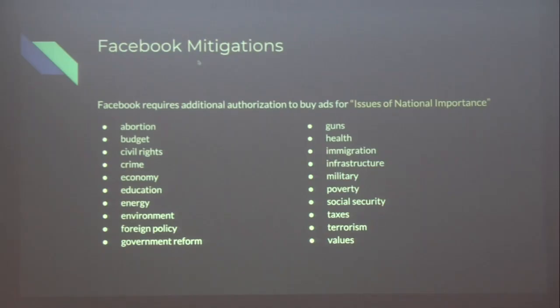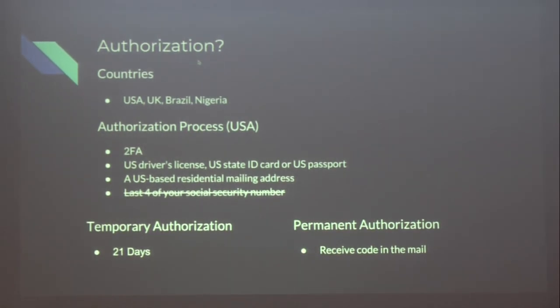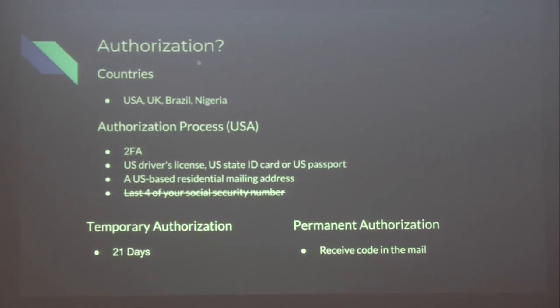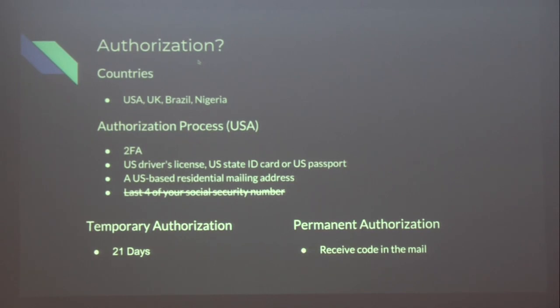For Facebook's mitigations: Facebook requires additional authorization for issues of national importance - essentially anything considered controversial at a political or national scale. To run those ads in the US, UK, Brazil, and Nigeria specifically, you need two-factor authentication enabled, a government-issued ID photo, and a mailing address in the country you're advertising in. When I first did this research they also required the last four digits of your social security number, but I checked last night and they've removed that. It's a work in progress. You have 21 days to post those ads, but eventually you have to enter a code mailed to your address to verify you receive mail there.